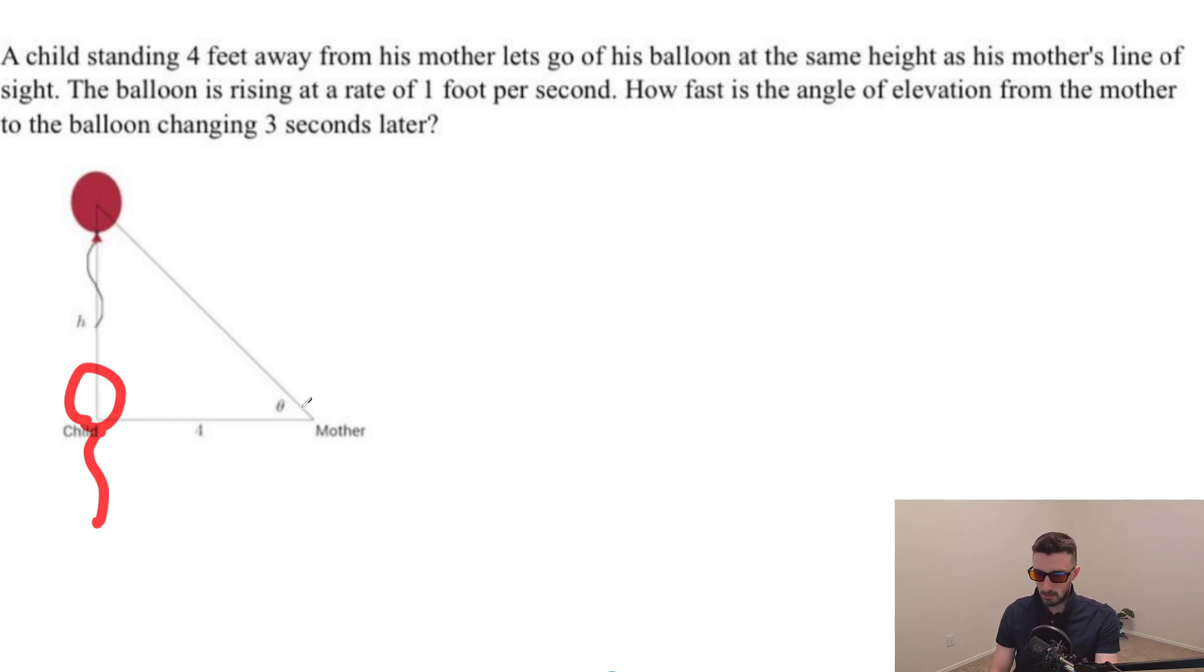So here is his mom. She has an eye, and with that eye, she is watching her child, making sure he doesn't run away. And then the boy lets go of the balloon. The balloon is going to be rising at the rate of one foot per second. So that balloon is going to start rising, and it eventually is going to make it up there.